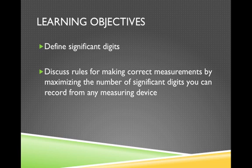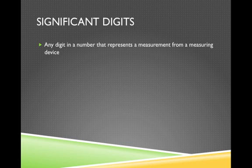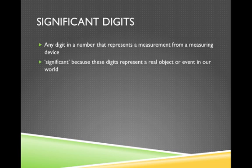It's our job as researchers to get as much information about the world around us as possible, and using those measuring tools to the maximum of their capability is going to get you that information. Anything less means you're leaving information on the table. Anything more, and now you've got data that actually doesn't make a lot of sense, and that can get you into a lot of trouble. The formal definition — a significant digit is any digit in a number that represents a measurement from a measuring device. We call these digits significant because they represent a real object or event in our world. These are the numbers that connect what we do theoretically in the lab to what's really happening in the universe around us, and that's what science is really trying to get at.